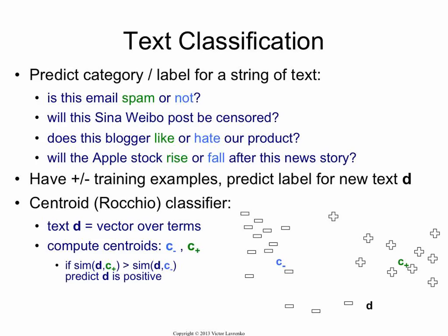You take the negative class — for example, users who hate your product, or things that are not spam — and compute a centroid vector by averaging them all. You compute a positive centroid too. For a new document D, Rocchio looks at which centroid D is closer to. If D is closer to C-plus, you classify it as positive rather than negative.